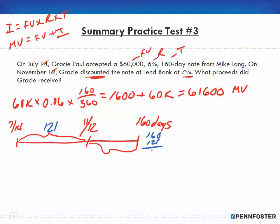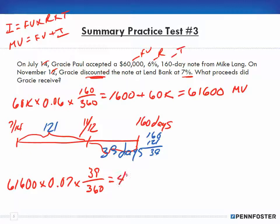This portion is 121 days, so 160 less 121 is 39 days for the discount period. Now the bank is discounting the note. We take $61,600 times 7% (0.07) times 39 days over 360, which gives us interest of $467.13.